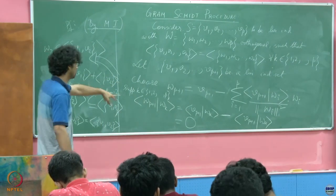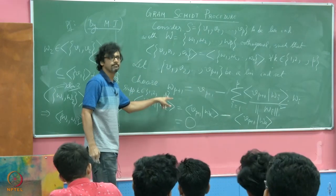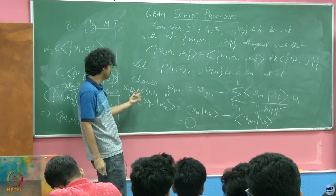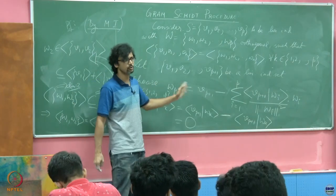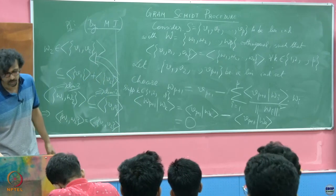Is that clear why it vanishes? Please ask if it is not. I am just writing in one shot. But that is nothing but 0, which is the orthogonality as desired. There is nothing special about the manner in which I chose K, it could be any of those fellows from 1 through P. So that means W P plus 1 is orthogonal to W 1, W 2, so on till W P. Anything else? Of course the most important part.